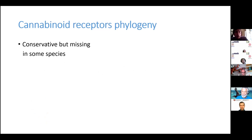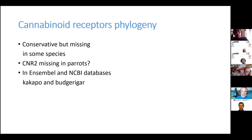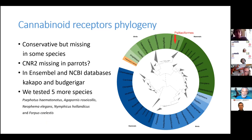These receptors are mostly conserved through vertebrate phylogeny, but from online databases we noticed that they are missing in some species. We noticed that CNR2 is missing in all parrots. In the online databases there are genomes of kakapo and budgerigar as model parrots, but we tested five more species.